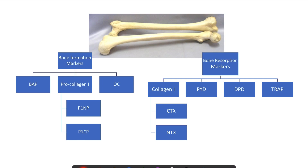This chart summarizes the bone formation and bone resorption markers. Bone formation markers include bone-specific alkaline phosphatase, osteocalcin, and procollagen type 1 propeptides — both N-terminal and C-terminal. Bone resorption markers include TRAP (tartrate-resistant acid phosphatase), pyridinoline compounds, and type 1 collagen telopeptides — both C-terminal and N-terminal telopeptides. These are very useful markers, and I hope this video was helpful.